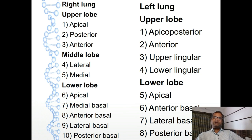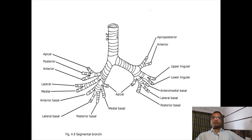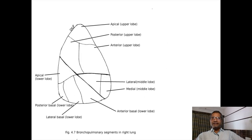Right lung has three lobes: upper lobe, middle lobe, and lower lobe. In the upper lobe, tertiary bronchi will form three bronchopulmonary segments: apical, posterior, and anterior. In the middle lobe: lateral and medial. In the lower lobe: apical, medial basal, anterior basal, lateral basal, and posterior basal. Therefore in right lung there are ten bronchopulmonary segments.